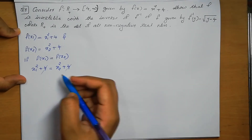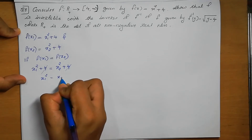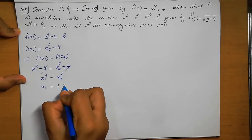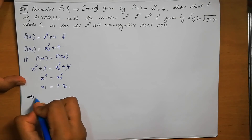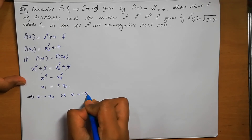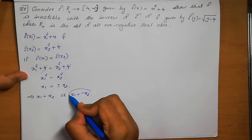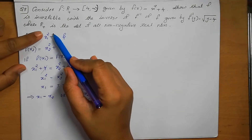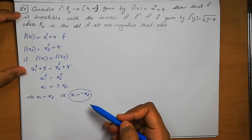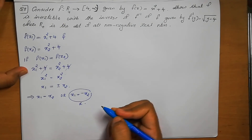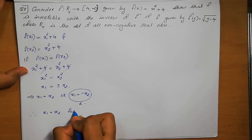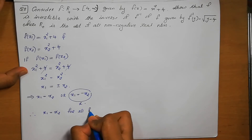The 4s cancel: x1² = x2², so x1 = ±x2. That means x1 = x2 or x1 = -x2. But no need to take the negative value because ℝ⁺ is the set of all non-negative real numbers — we take only positive values. Therefore x1 = x2 for all positive real numbers, so the function f is 1-to-1.